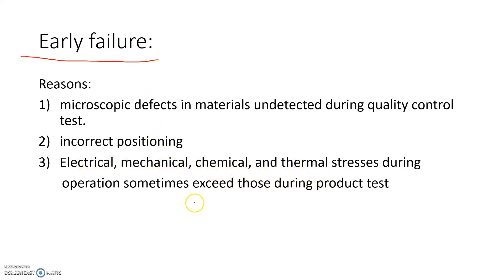Another cause of early failure is electrical, mechanical, chemical, or thermal stresses during operation. For example, suppose an electronic gadget is tested and passes at five volts. After implementation, due to some noise, the incoming voltage exceeds five volts, and as a result the electronic device burns out. Similarly, mechanical, chemical, or thermal stresses can also cause early failure.